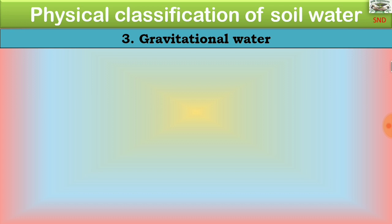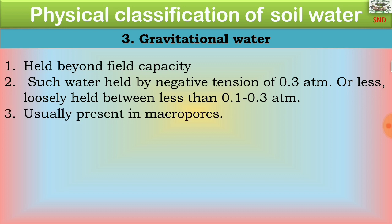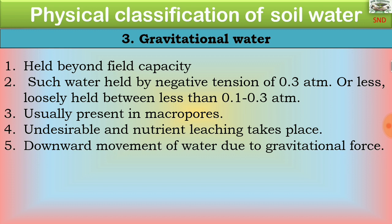The third is gravitational water, held beyond field capacity. It is loosely held at a negative tension of 0.3 atmospheres or less — less than 0.1 to 0.3 atmospheres — and is usually present in macropores. It is undesirable as nutrient leaching takes place through its downward movement due to gravitational force.